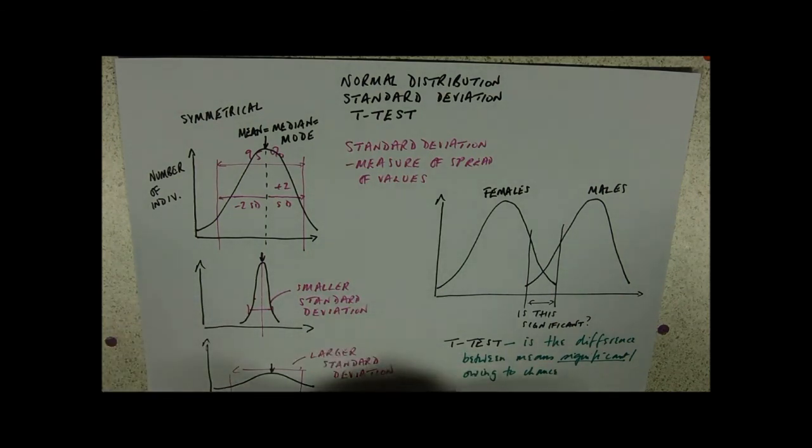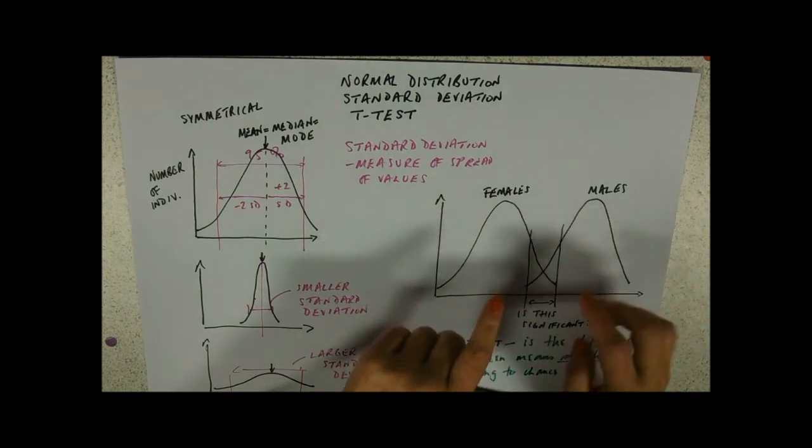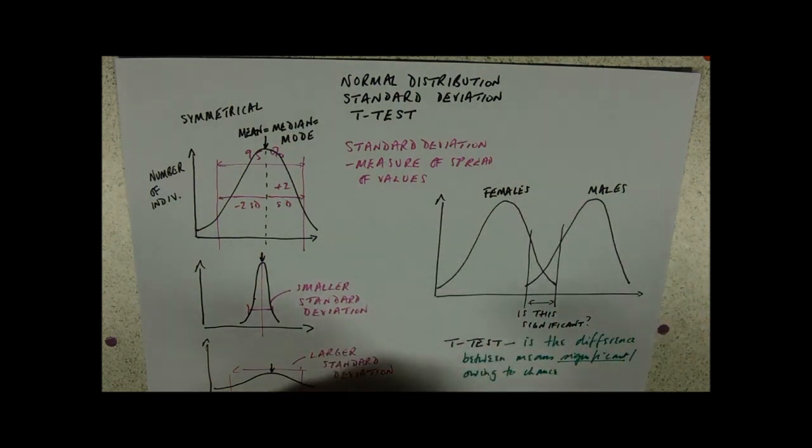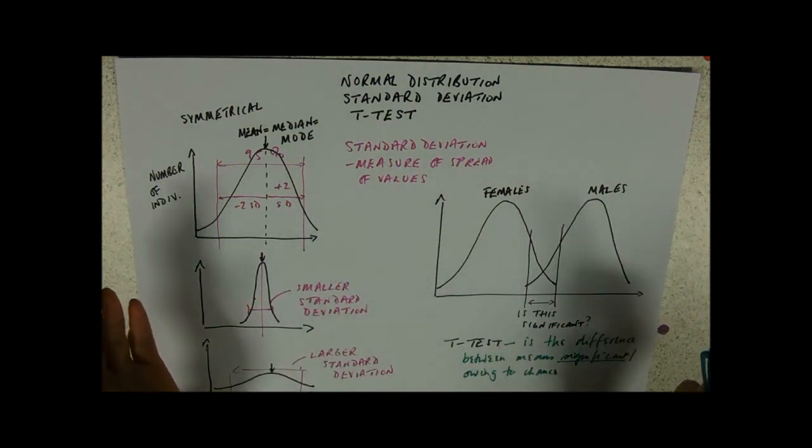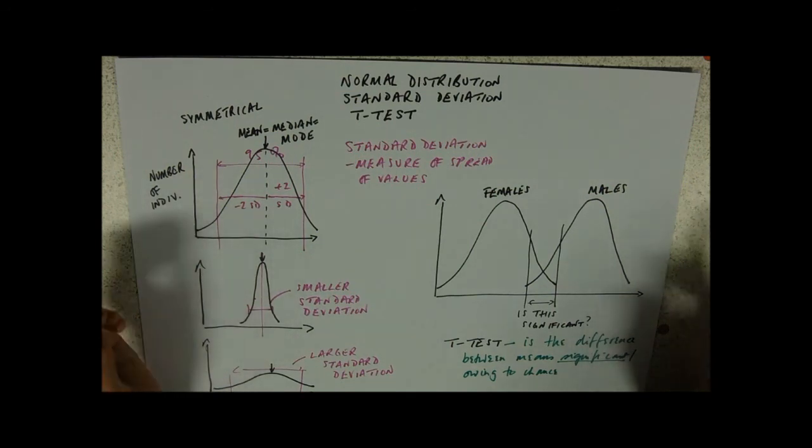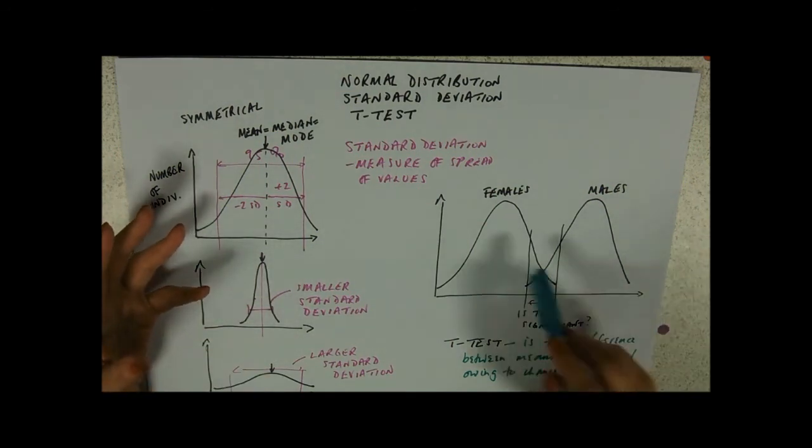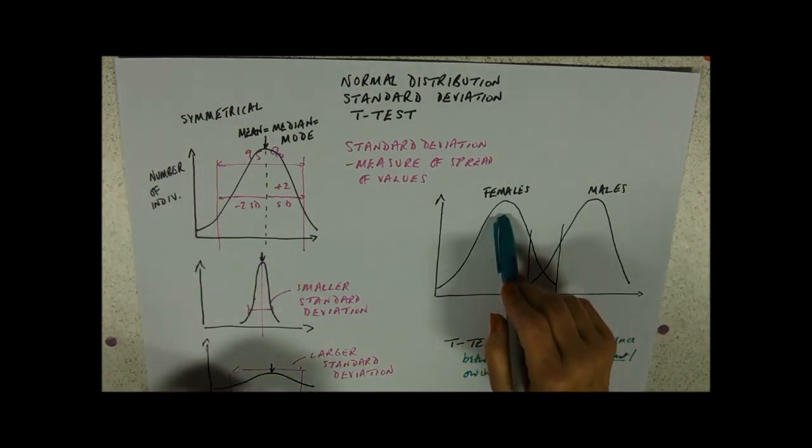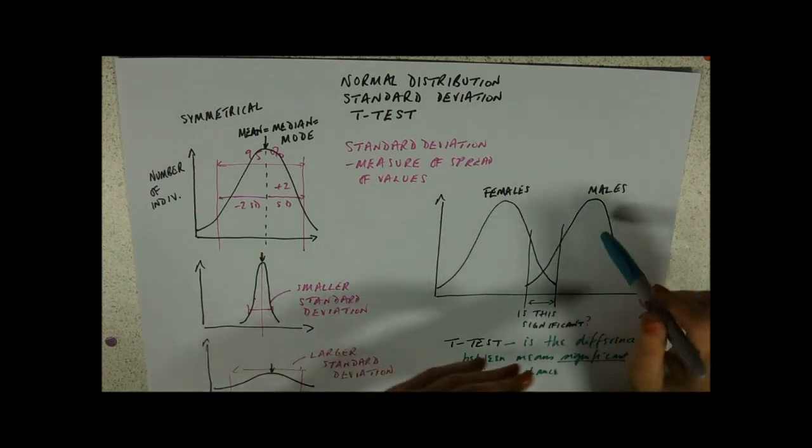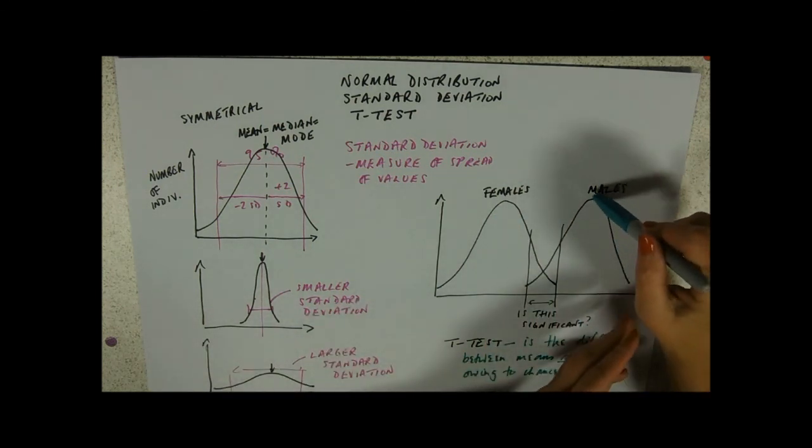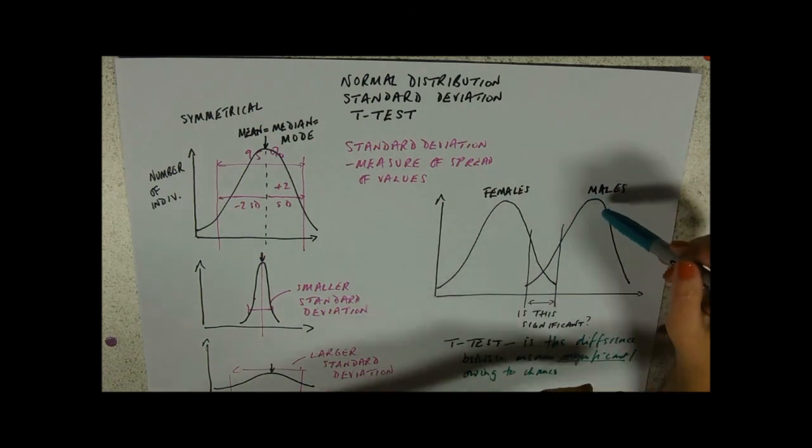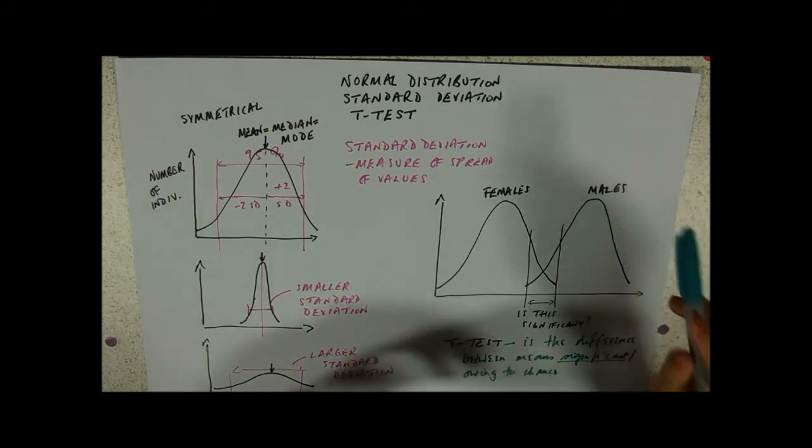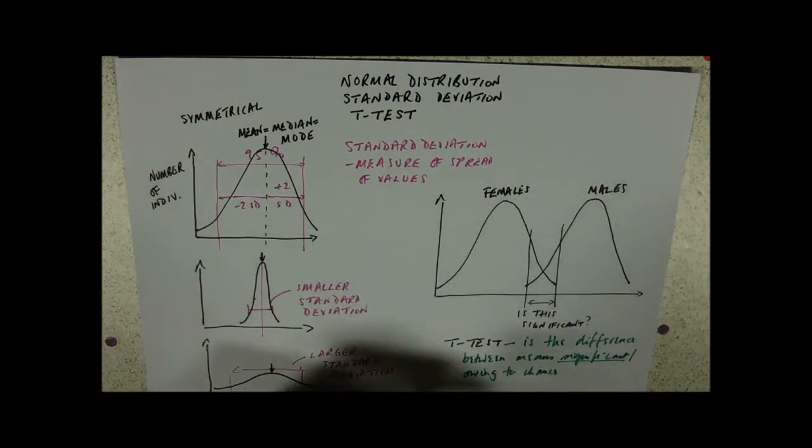Effectively it's quite complicated. You need to know the difference between the means, and then you divide that by something like the square root of the standard deviation of this lot over the sample size minus 1, all square root. There's a lot of number crunching that goes on in this.